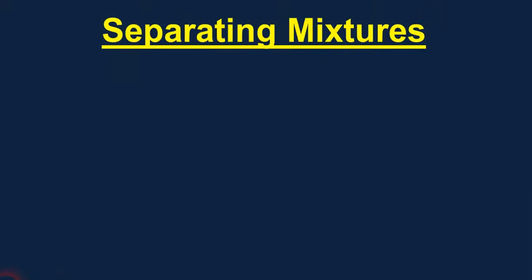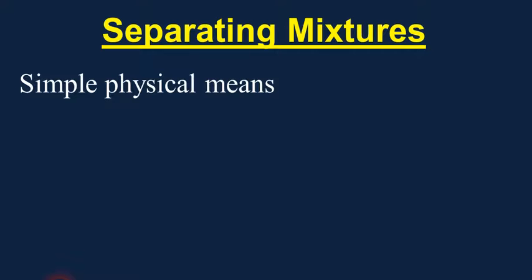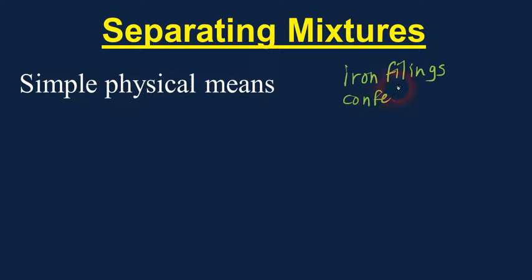Let's talk about a few ways to separate mixtures. One common way is just by simple physical means — separating the pieces out. If you have a salad, you can separate out the phases just by picking them apart. If you don't like cucumbers, you can just pick them out. Sometimes you have to use ingenious ways: if you had a mixture of iron filings and confetti, you could use the fact that iron is magnetic and run a magnet over the mixture to separate those two things.